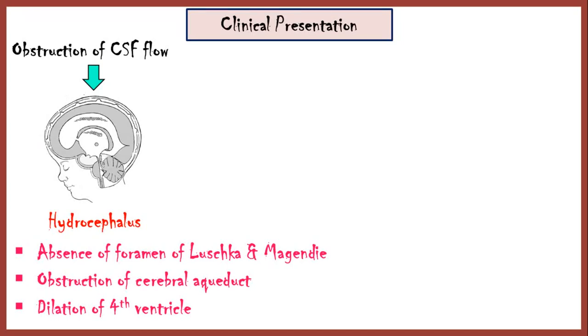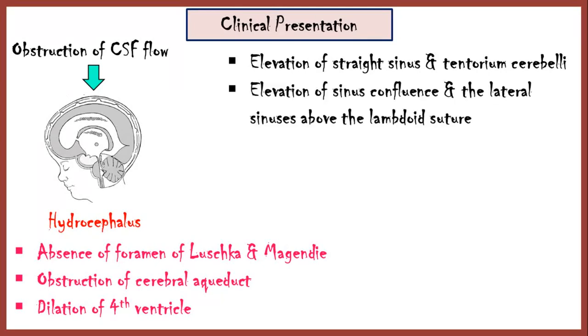Due to the posterior fossa cyst, straight sinus and the tentorium cerebelli are elevated to a higher position above normal. And in most cases, sinus confluence and the lateral sinuses are elevated above the lambdoid suture. Due to high pressure in the posterior cranial fossa, the occipital bone becomes thinned, as we discussed earlier. And possible brainstem compression gives rise to many other complications as well.